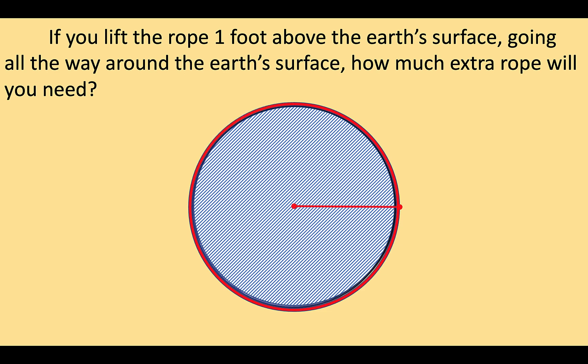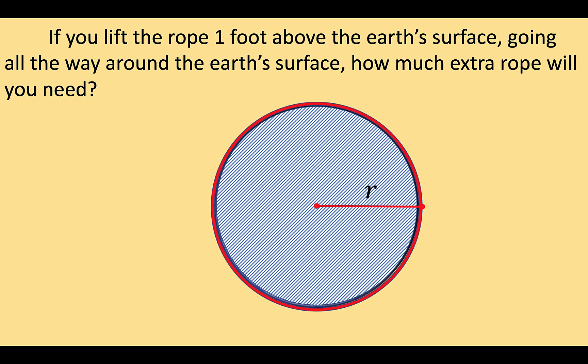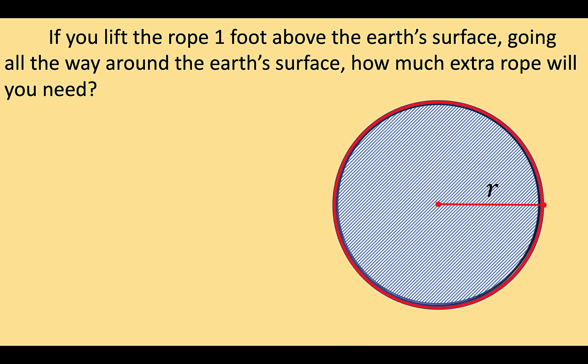Let the radius be equal to R. And let's remember that the circumference of a circle is computed by the formula C equals 2πR. So in this case, let's denote C₁ be equal to the circumference of the Earth represented by this red circle.